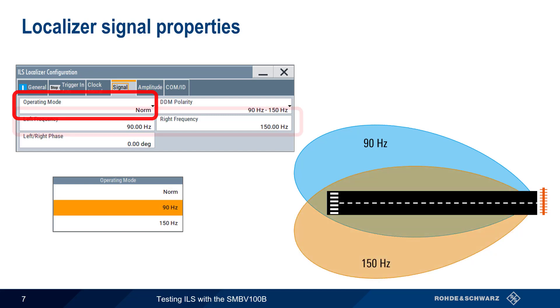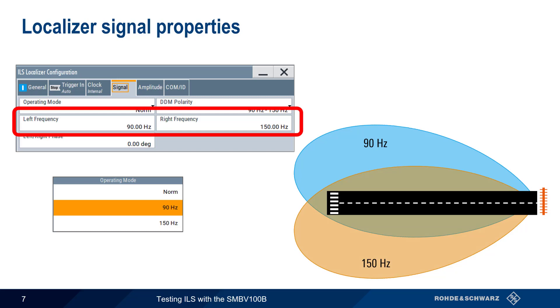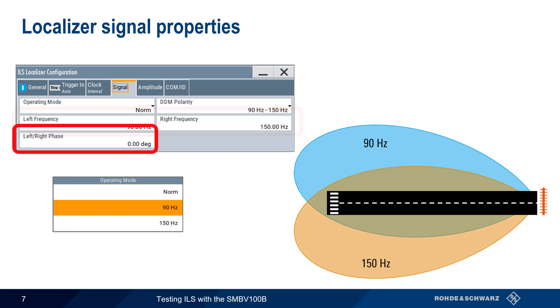The frequency of each lobe can be changed individually, and the left-right phase parameter controls the phase difference between the signals in each lobe. Normally, none of these parameters need to be modified.